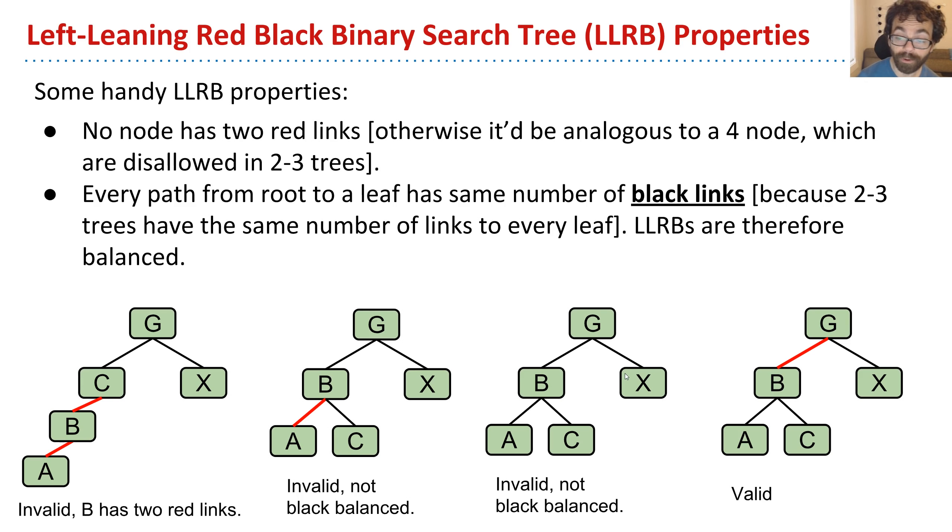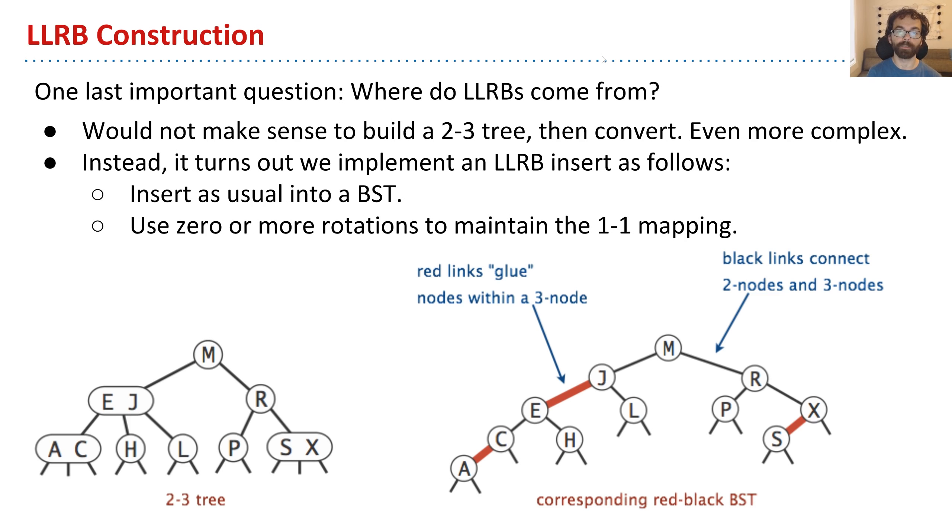OK, so the reason this is so important is because if we actually have an LLRB, we know its height will be no more than around double the corresponding 2-3 tree. And since a 2-3 tree has height that is logarithmic in the number of items, LLRBs are also logarithmic in the number of items. So this raises one last and very important question, which is where do LLRBs come from?